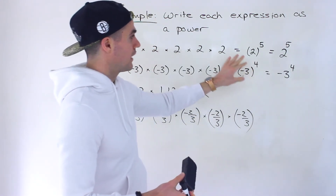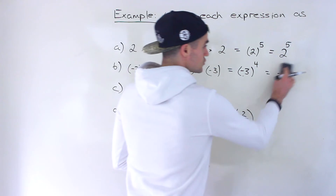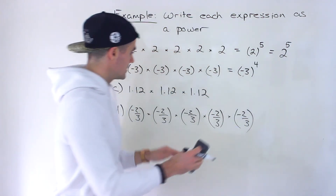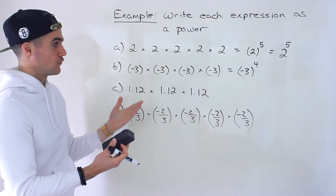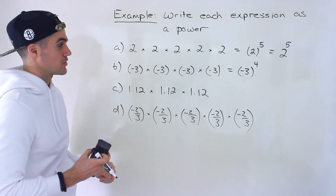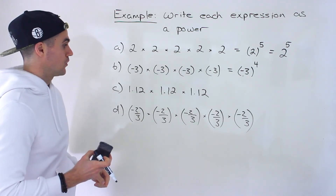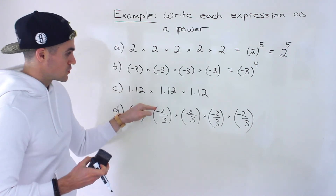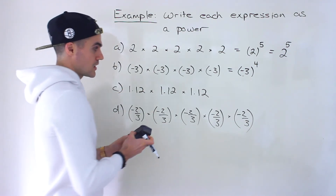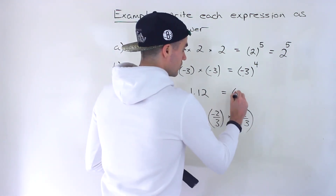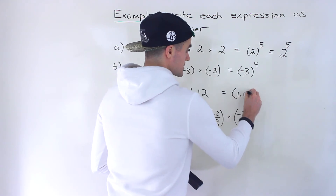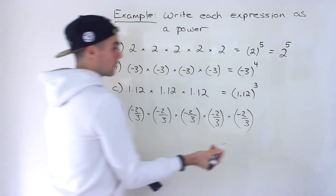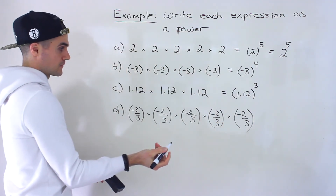So overall, I'd recommend getting into the habit of writing brackets no matter what base you're working with. Over here we have 1.12 times 1.12 times 1.12. This also works when the base is a decimal, so this would be 1.12 to the power of 3.